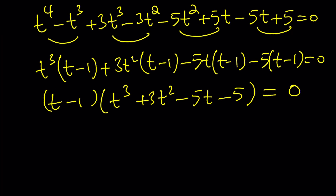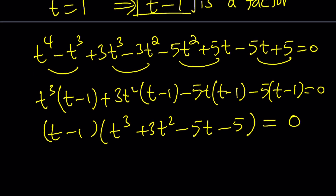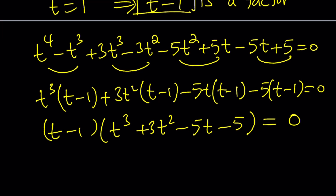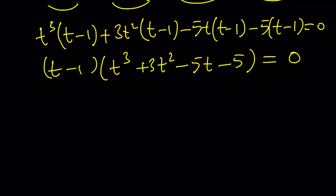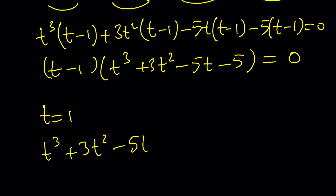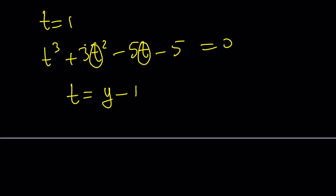We ended up with t equals 1 as one solution, and also a cubic factor. To solve the cubic, you can use the cubic formula, but first reduce it by replacing t with something like y minus 1, which eliminates the quadratic term and gives a depressed cubic. We've discussed the cubic formula in other videos.